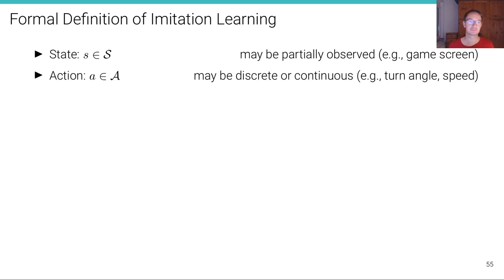And then there's the action. A out of the action space calligraphic A. And the actions may be discrete or continuous. For example, they may be, in our case, the turning angle or the speed. Or the steering angle or the speed.